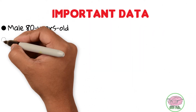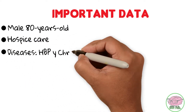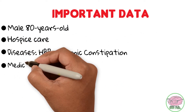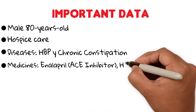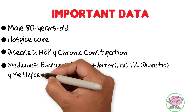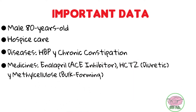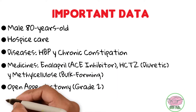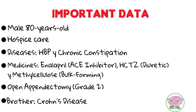It's a male 80-year-old patient in hospice care with high blood pressure and chronic constipation. He takes enalapril, which is an ACE inhibitor; hydrochlorothiazide, a diuretic; and methylcellulose, a bulk-forming laxative. He had an open appendectomy due to grade 2 appendicitis, and his brother is diagnosed with Crohn's disease.